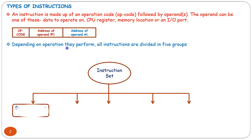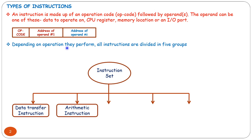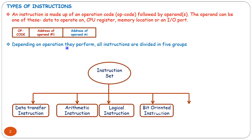The five instruction groups are: Data Transfer Instruction, Arithmetic Instruction, Logical Instruction, Bit Oriented Instruction, and Branch Instruction. We saw Arithmetic Instruction in detail in the previous video lecture. Now we are going to discuss the Data Transfer Instruction Set.